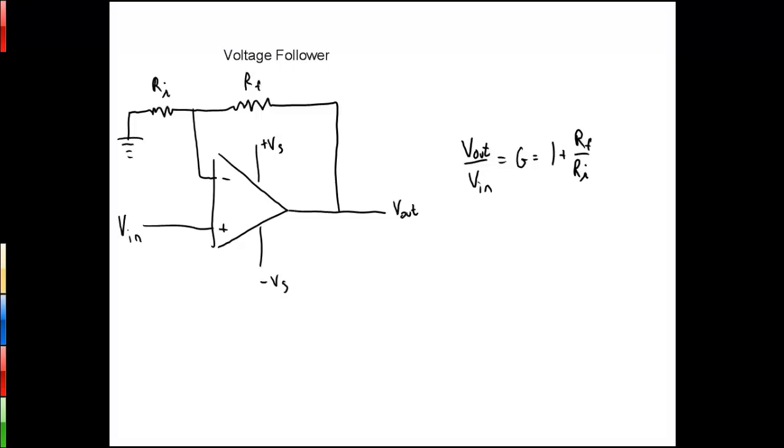If we take a non-inverting amplifier circuit where we have a voltage in coming into the positive terminal of our op amp and connected via feedback through a resistor RF and connected to ground through a resistor RI, then we have shown that the gain for this particular circuit is equal to 1 plus the ratio of RF to RI.